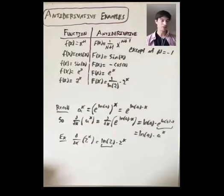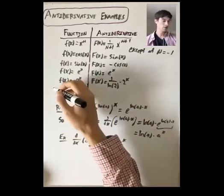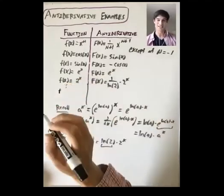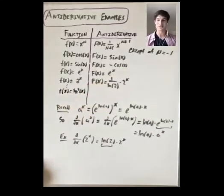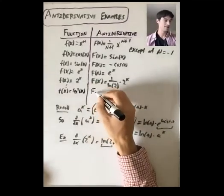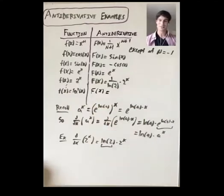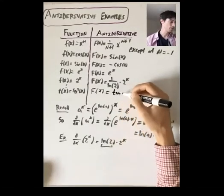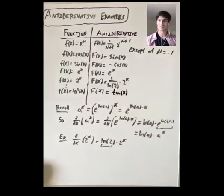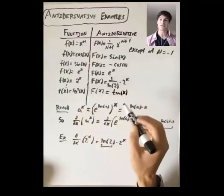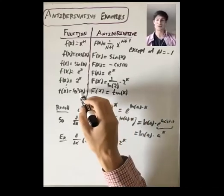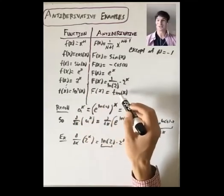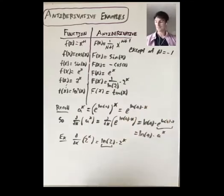Let me keep going with functions and their antiderivatives. What's a function whose derivative is secant squared of x? This is another thing you learned in Math 2a. You learn that the derivative of tangent of x is secant squared x. So that means an antiderivative of secant squared x is tangent of x. I started with a function I know how to differentiate, wrote down the derivative on the function side, and the function I know how to differentiate goes on the antiderivative side.